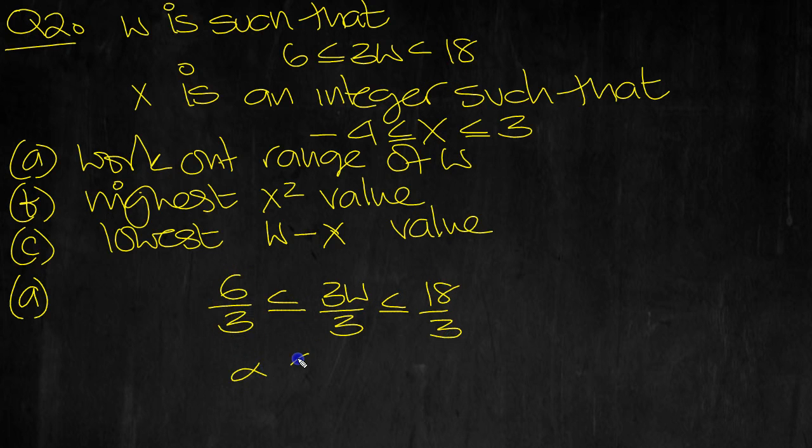In other words, 2 is less than or equal to—oh, that should be less than there, shouldn't it? W is less than 6. So that's part a.